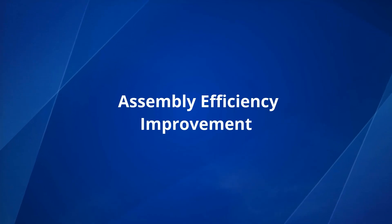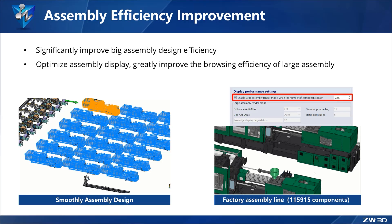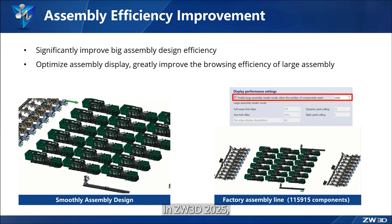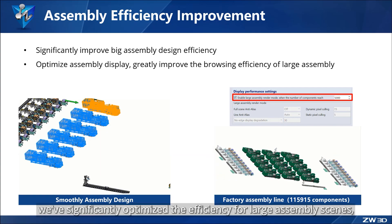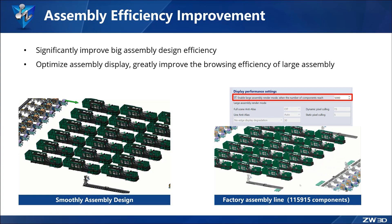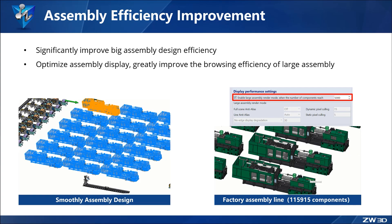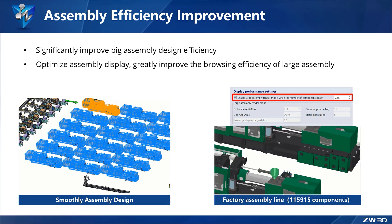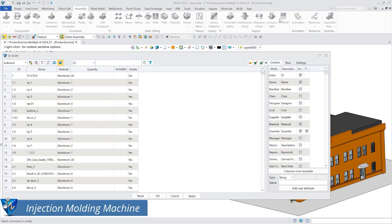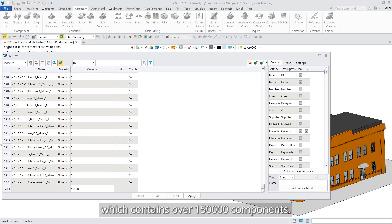Assembly efficiency improvement: in ZW3D 2025, we've significantly optimized the efficiency for large assembly scenes, enhancing assembly design efficiency by over 50 percent. Let's see this in action with an injection molding machine production line model, which contains over 150,000 components.